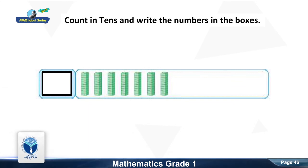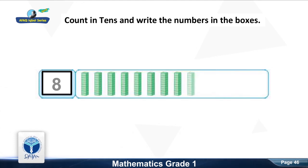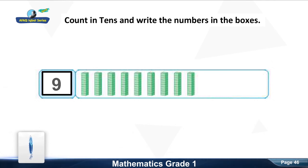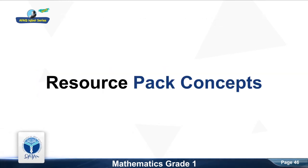Next: good, seven tens — write seven in the box. Next: good, eight tens — write eight in the box. Next: good, nine tens — write nine in the box. Next: good, ten tens — write ten in the box.